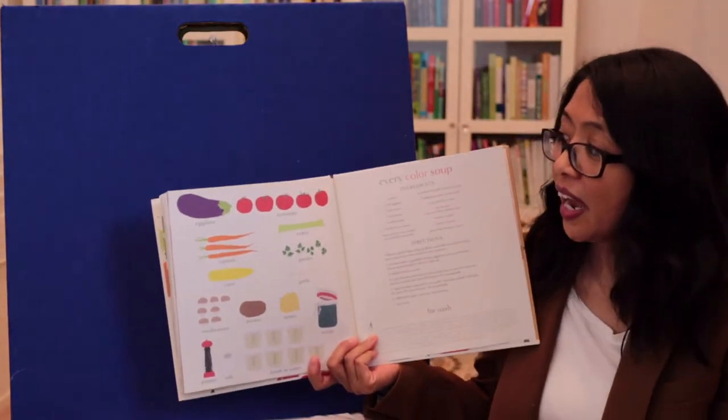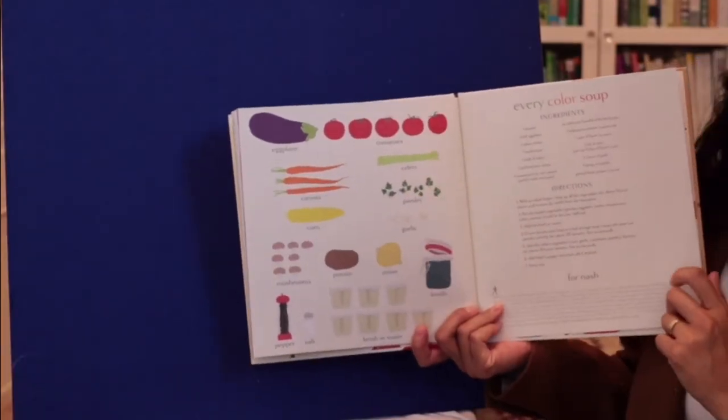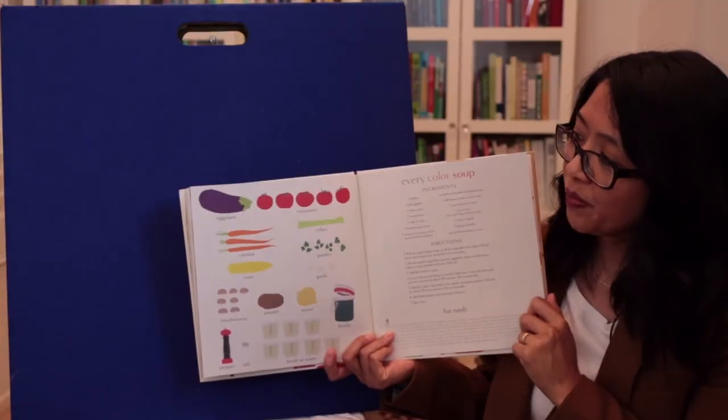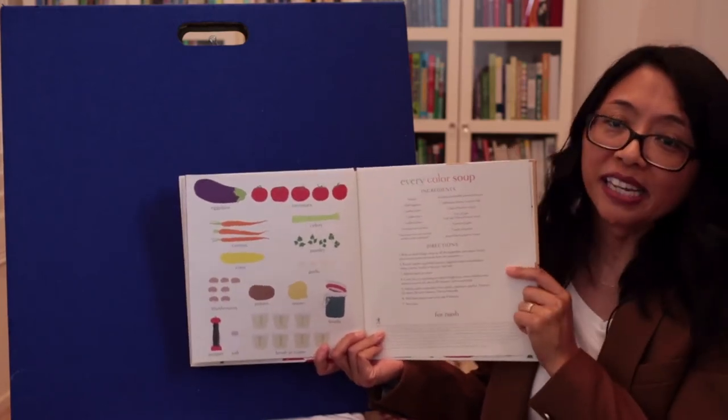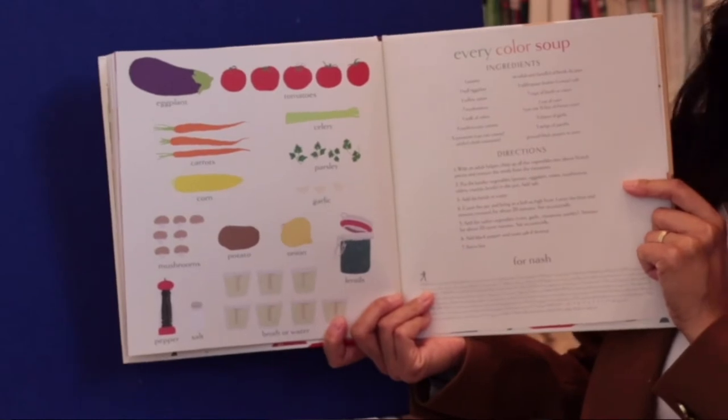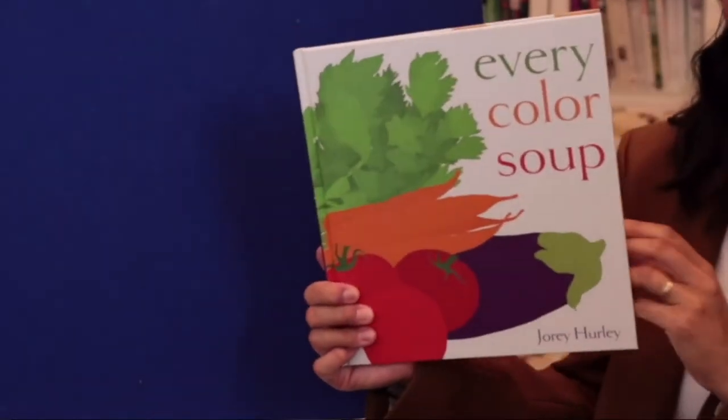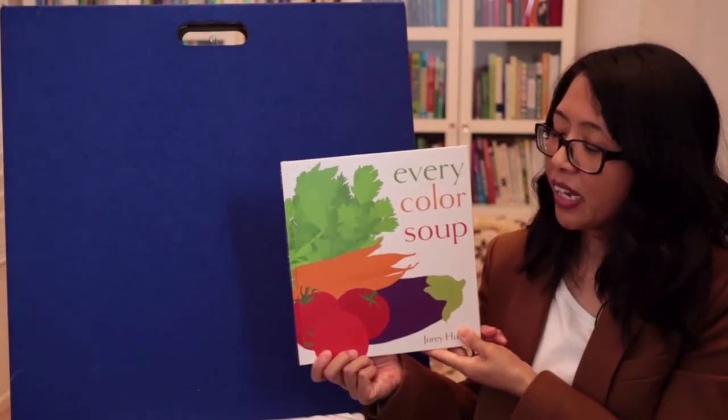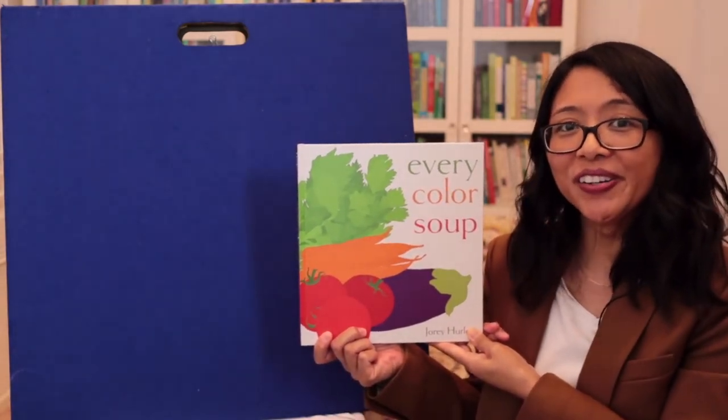That's the end of the story. And right here at the end, you'll see all of the ingredients for the soup. And there's also a recipe for making every color soup. And that's the end of Every Color Soup written and illustrated by Jory Hurley.